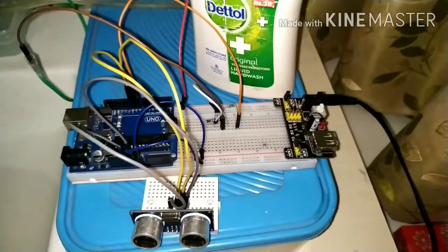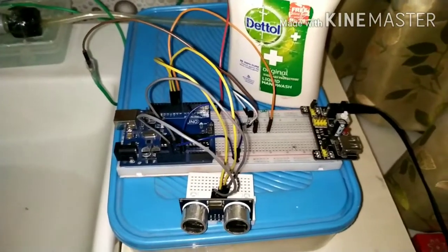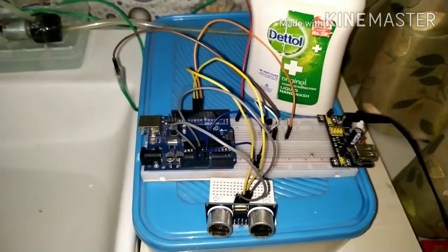Then connect the plus of the breadboard rail to VIN pin on the Arduino. Ground of the breadboard rail to ground on the Arduino.